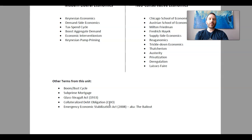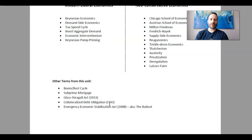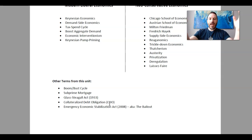During the subprime mortgage crisis, pension funds for teachers and nurses and all these different people invested in these mortgage securities, and they lost hundreds of thousands — potentially millions, billions of dollars. In the end, the subprime mortgage crisis cost the world economy $20 trillion. $20 trillion just went poof and disappeared.